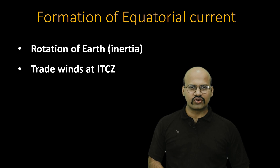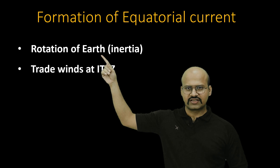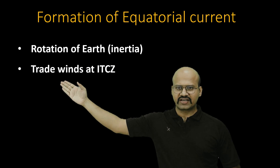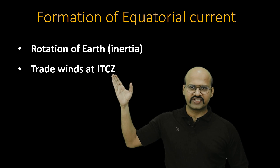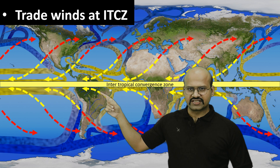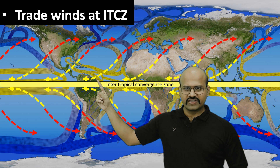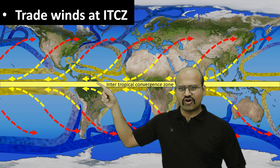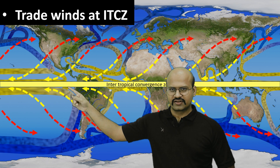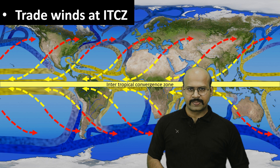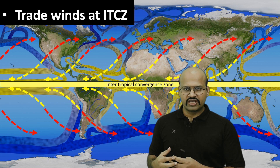Now let's see why these equatorial currents are formed. The two main reasons are the rotation of the Earth and the inertia of water, as well as the force created by trade winds at the Intertropical Convergence Zone. Trade winds in this region flow and when they approach the ITCZ they flow almost parallel to it, dragging ocean water along with them — that is why we get the equatorial current.